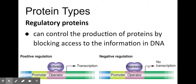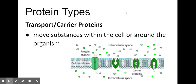Regulatory proteins control the production of proteins by blocking access to the information in the DNA. They determine when we need more or less of a certain protein. Certain disorders occur because of a buildup or lack of proteins, so these are super important because they control how the DNA is read. Then we have transport and carrier proteins, which were the first proteins we talked about this year when we discussed the cell membrane and how things can get in and out.